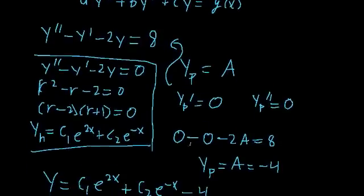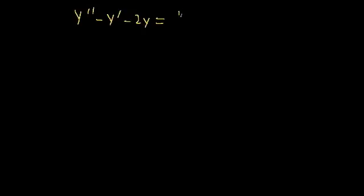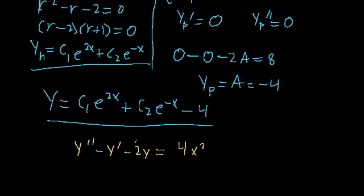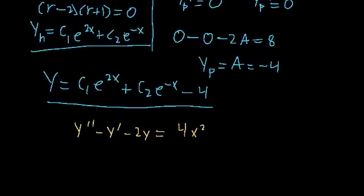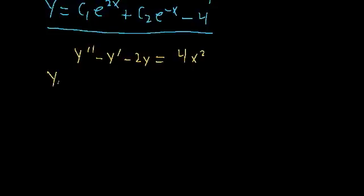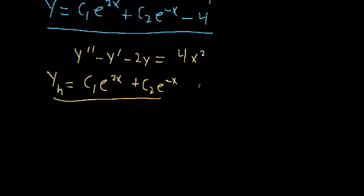Let's try a slightly trickier example: y'' - y' - 2y = 4x². We first need to find the homogeneous solution. The left-hand side is the same as the previous equation, so they share the same homogeneous solution: y_h = c₁e^(2x) + c₂e^(-x). Now let's try to guess a particular solution.